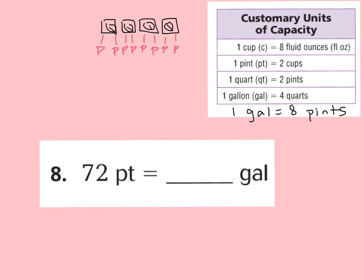Now that we know 1 gallon equals 8 pints, let's determine our operation. When you go from a small unit to a larger unit, you divide because you'll have less of the bigger unit. If I have 72 pints and 8 pints equals 1 gallon, I divide: 72 divided by 8 is 9 gallons. So 9 gallons has the same value as 72 pints.